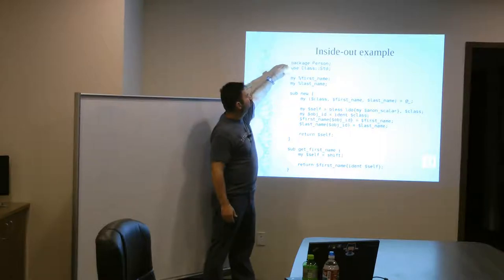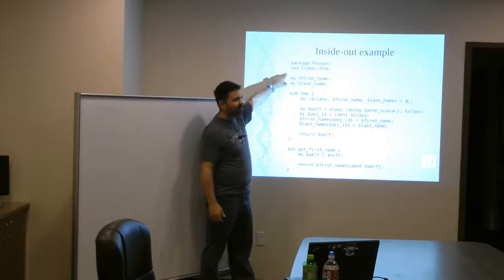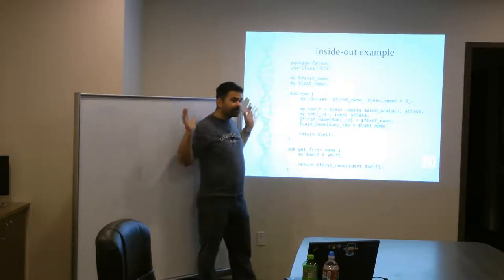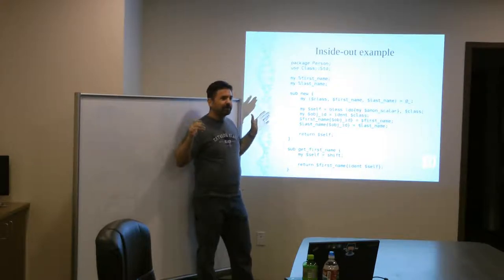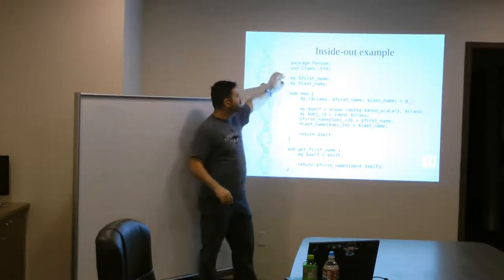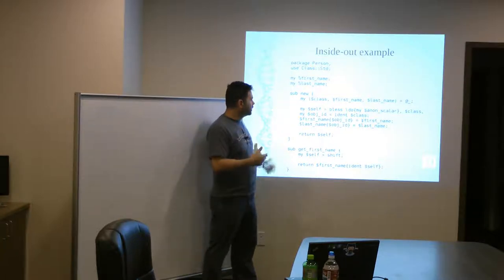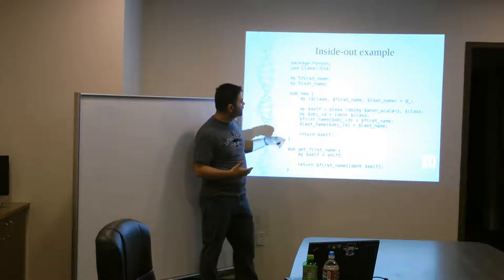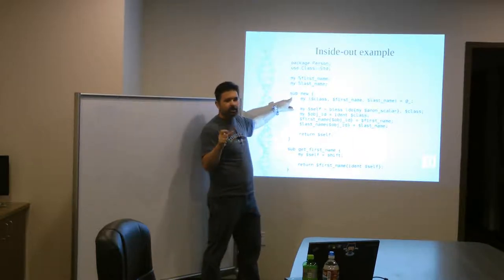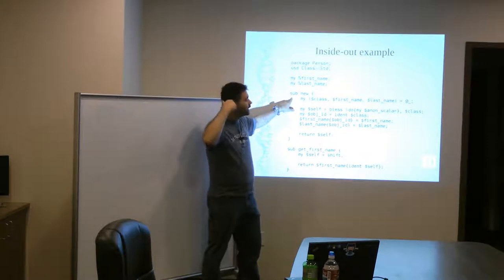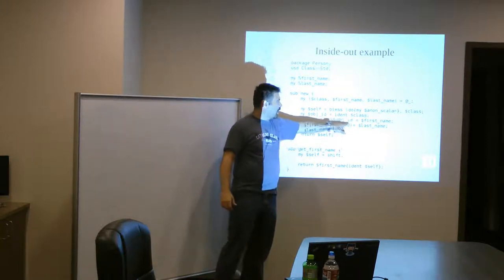And what happens when you have a package and you declare some stuff as my inside the package? The scope of these variables is this package. Outside of this package, you can't see them. And so, the idea behind inside-out is you're storing stuff in these variables. And outside of this package, you can't see them. So, well, how do you access the values? So, you can't do this thing where you just treat your object reference as a hash and go out and look. You can do it like a data dumper on the hash and see what's inside because all you're going to see are these object IDs. So, actually, you won't even see that.